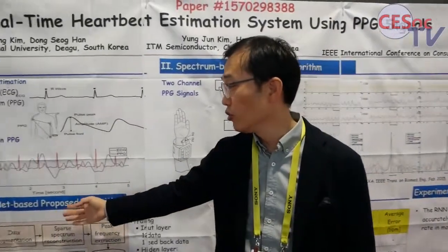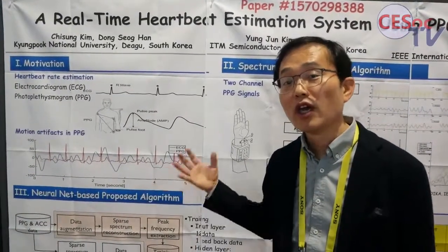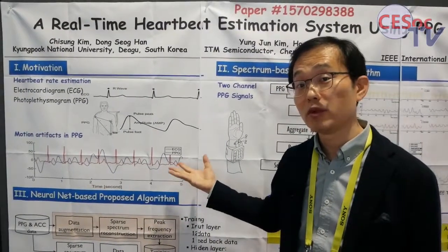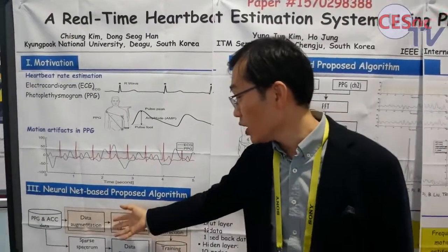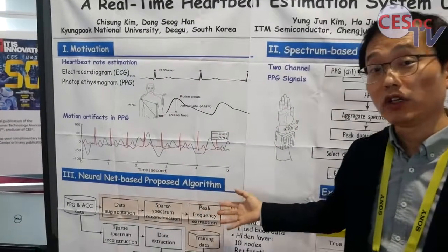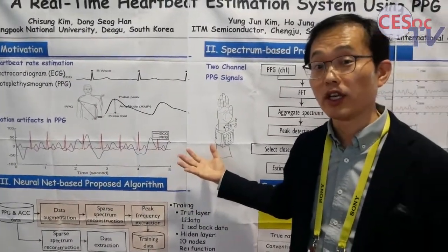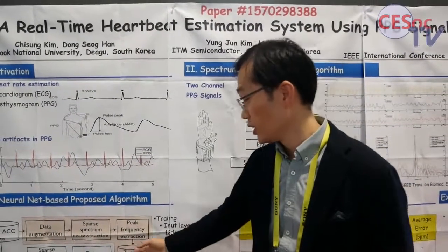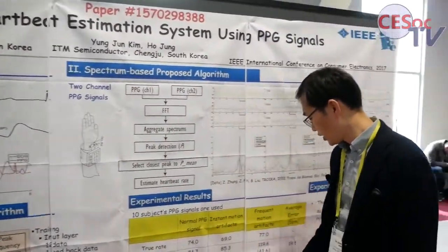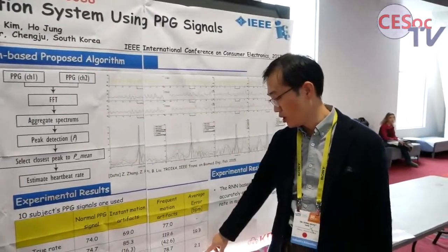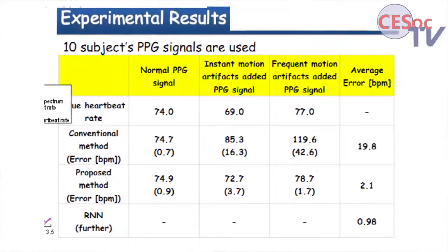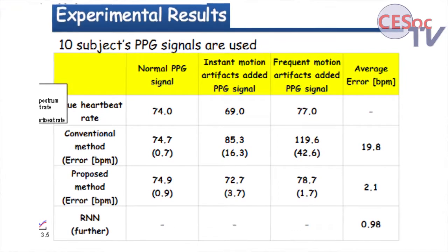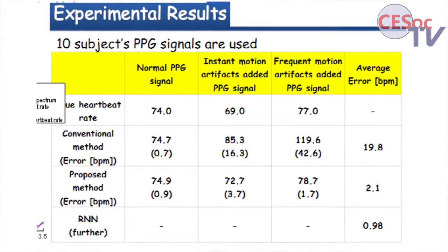It's called the neural network based system. If we add neural network based technology, we can improve the performance significantly. We first do the training with the database and then check the heartbeat rate in real time. The final result obtained is only 0.98 — it's really accurate, even while working on a treadmill, the result is very correct.